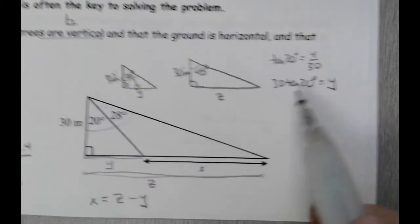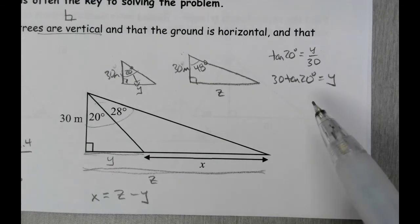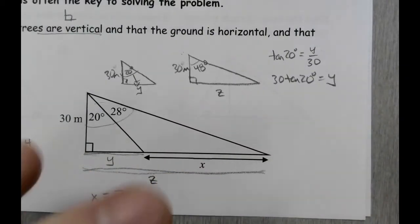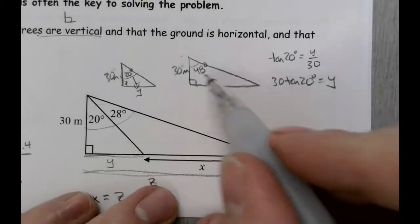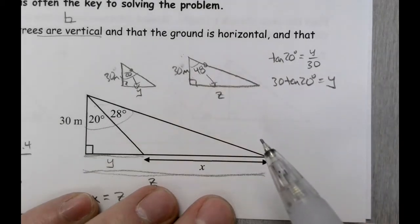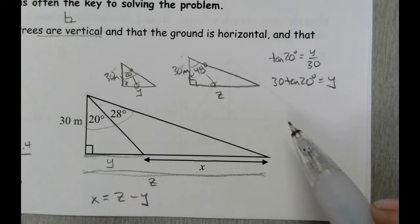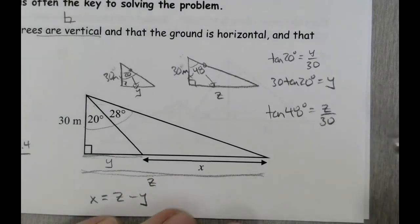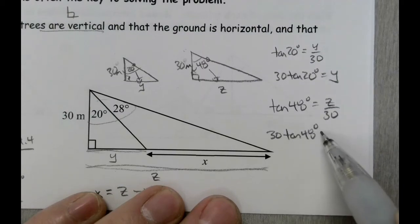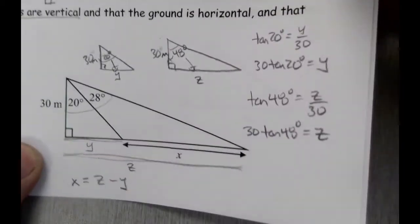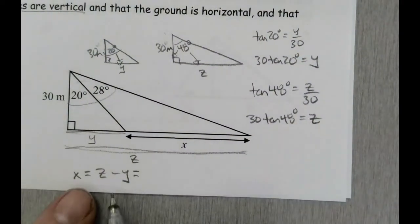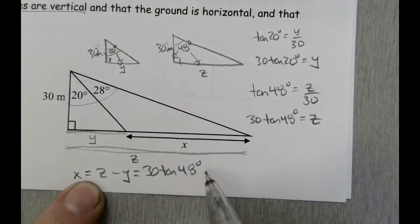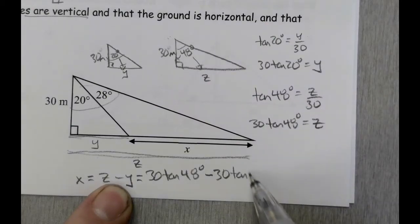I can get that number later when I really need it. Right now I've got to do work on the larger triangle as well. My reference angle is 48 degrees, I'm looking for the side opposite — Z — and I have the side adjacent — 30. That's tangent again. So tangent of 48 degrees equals Z over 30. The 30 is in the denominator, so Z equals 30 multiplied by the tangent of 48 degrees. Now, with those two pieces, x equals Z minus y, which is 30 times tangent of 48 degrees, minus 30 times tangent of 20 degrees.